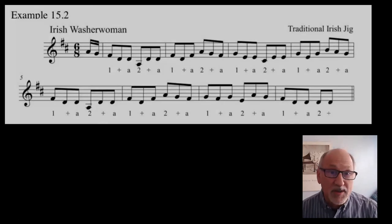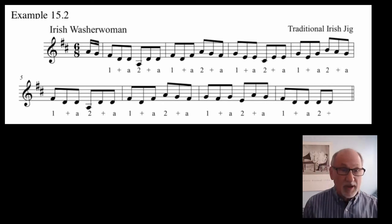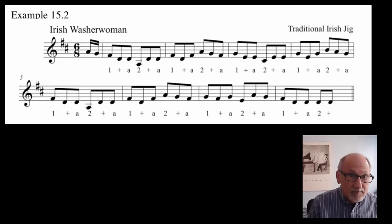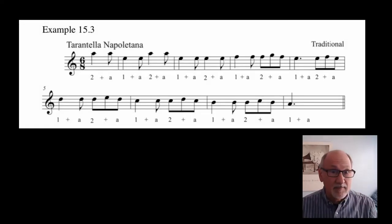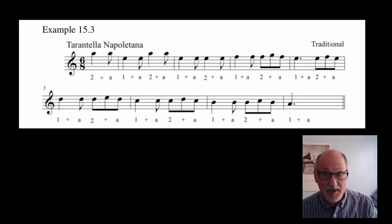There are many characteristic types of music that require compound time, such as an Irish jig or also a tarantella. You should take the time to go ahead and try to play or sing through these examples yourself and identify the keys for each. One of them is in a minor key.